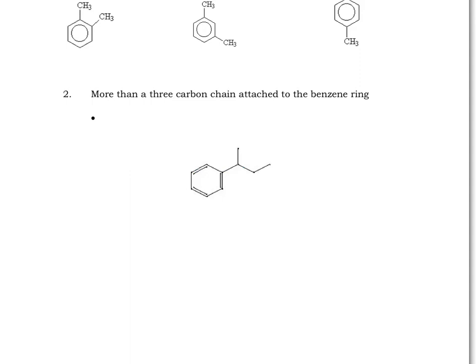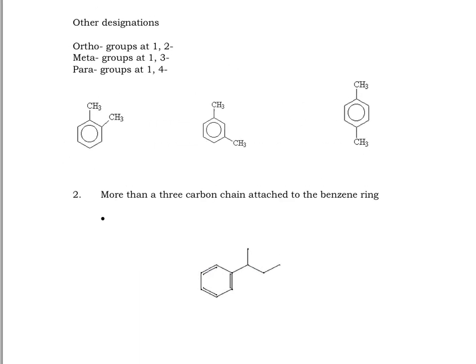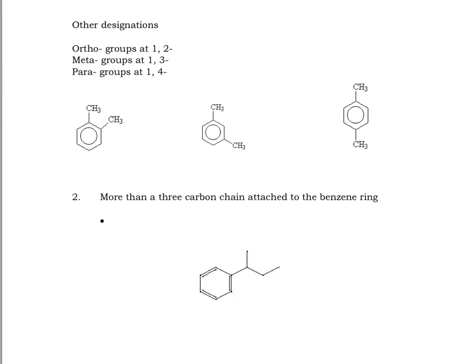So, there is other designations instead of using the numbers. Because it's understood that you can put the lower number with the thing that comes first in the alphabet. Let's pretend for a second here that instead of this being CH2, I'm going to pretend that this is going to be CH2CH3. And do the same down here. So, I'm actually going to have ethyls and methyls attached to my benzene ring.